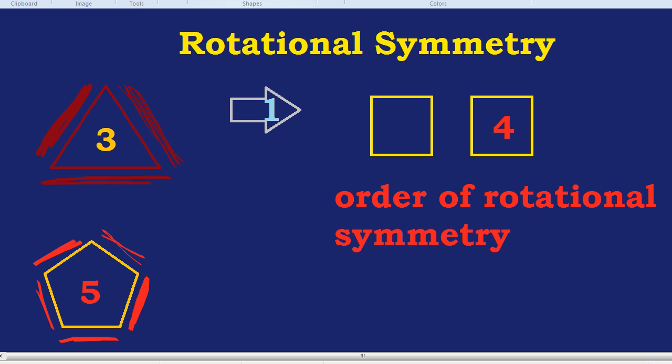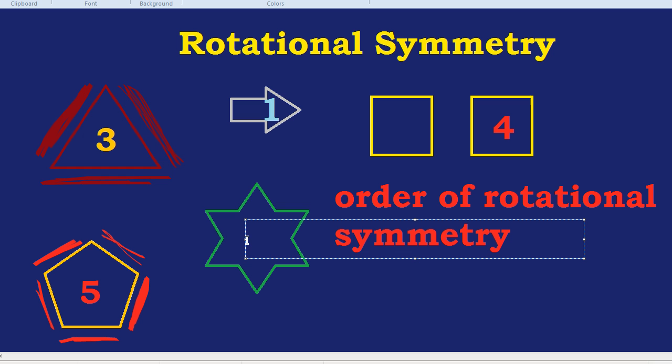How about a star? A star like so. That would have, you guessed it, six. It would have an order of six for its rotational symmetry. It has six points to its star. So if each of those points were the new top of the star, you can imagine it would look exactly the same. So we can label that six.